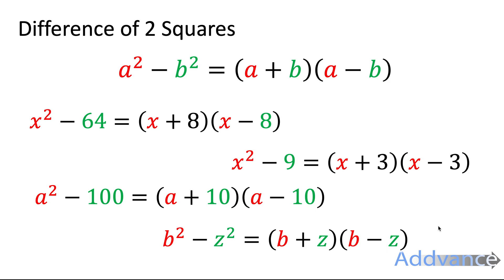So every single time you've got a square minus a square, you can put it into brackets where it's the square root plus the square root, the square root minus the square root. You will have to do a lot of square rooting for this when you want to factorise it.